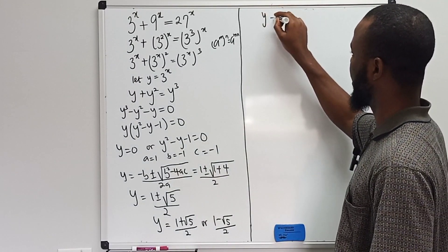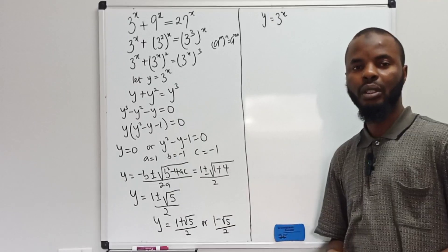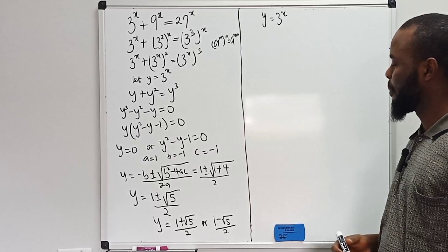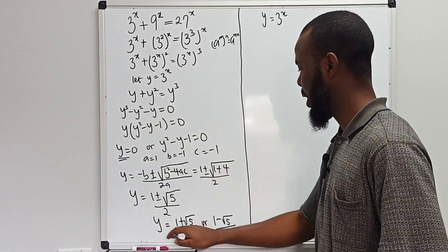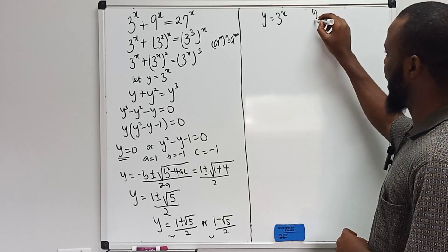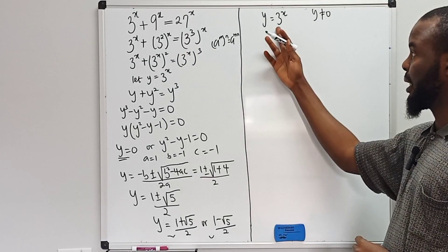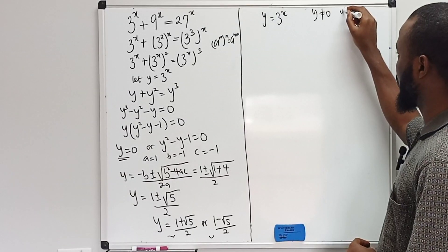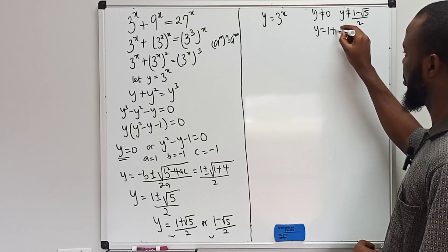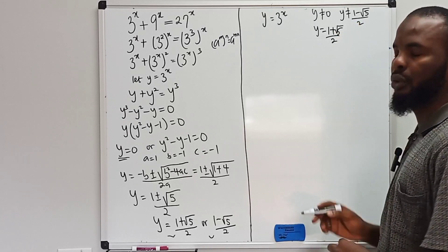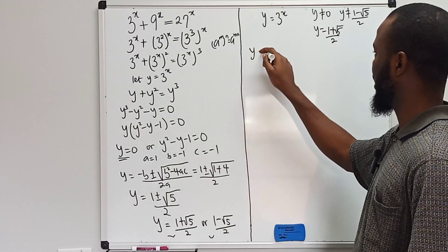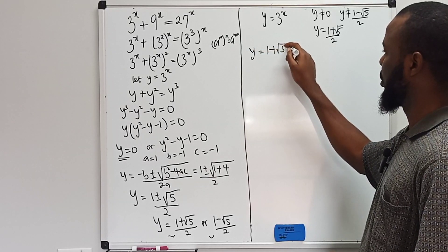So now the values are: y equals 0, y equals 1 plus root 5 over 2, and y equals 1 minus root 5 over 2. But we need to get x, and we have y equals 3 to the power of x. Since 3 to the power of x must always give a positive value, y must be positive. So y cannot be 0, and y cannot be 1 minus root 5 over 2 since that is negative. Therefore, y can only equal 1 plus root 5 over 2.